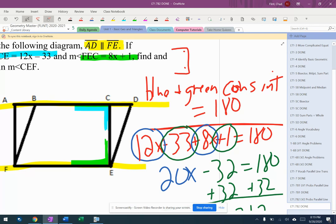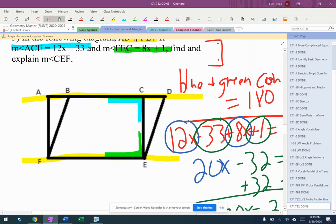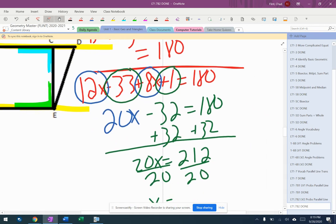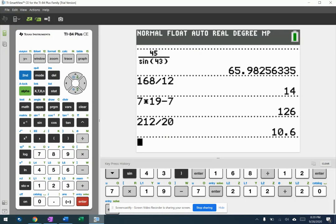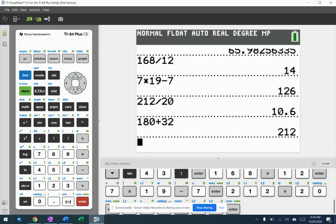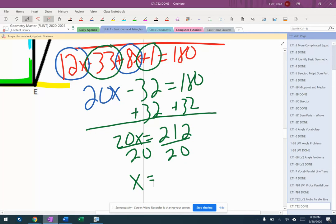12X minus 33, 8X plus 1, CEF, CEFC. 180 plus 32. Is that right? 180 plus 32. 212. Okay. So it must be I had this come out to be 10.6 for whatever reason. So 10.6.